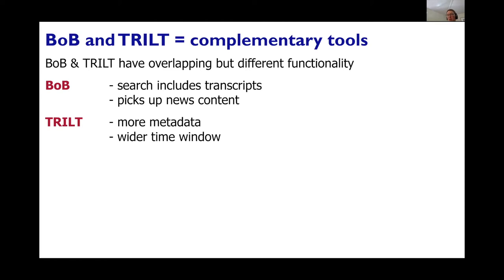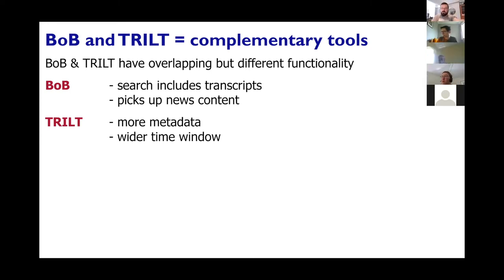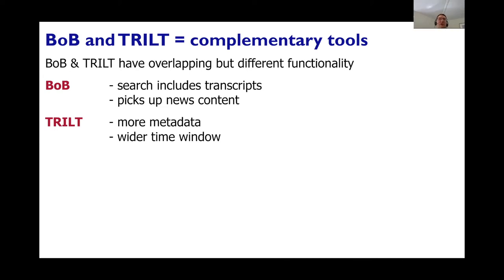Bob and TRILL, although they come from the same stable, have slightly different methodologies and therefore slightly different strengths and weaknesses when it comes to thinking about research on broadcast media. Both would happily pick up titles of programs, for example, but Bob also has the ability to look at transcripts for programs. That can be particularly helpful if the project you wanted to work through with students involved looking at news content, because that won't be picked up in TRILL. On the other hand, TRILL has more metadata overall, including a synoptic description of the program, and it is available for a wider time window going back longer in time than Bob.